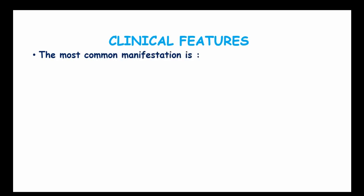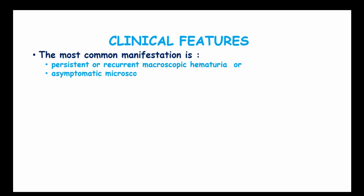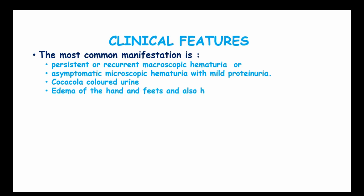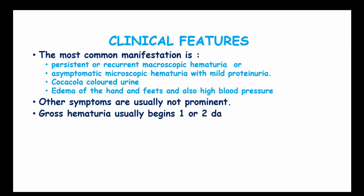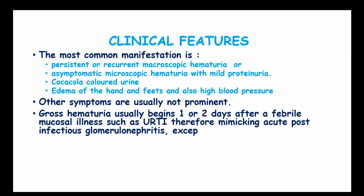The clinical features of IgA nephropathy — the most common manifestations — are persistent or recurrent macroscopic hematuria or microscopic asymptomatic hematuria with mild proteinuria. Coca-Cola colored urine in these patients, edema of the hands and feet, and high blood pressure are also present. Gross hematuria usually begins 1–2 days after a febrile mucosal illness such as upper respiratory tract infection, therefore mimicking acute post-infectious glomerulonephritis, but in this case the onset of hematuria is earlier.